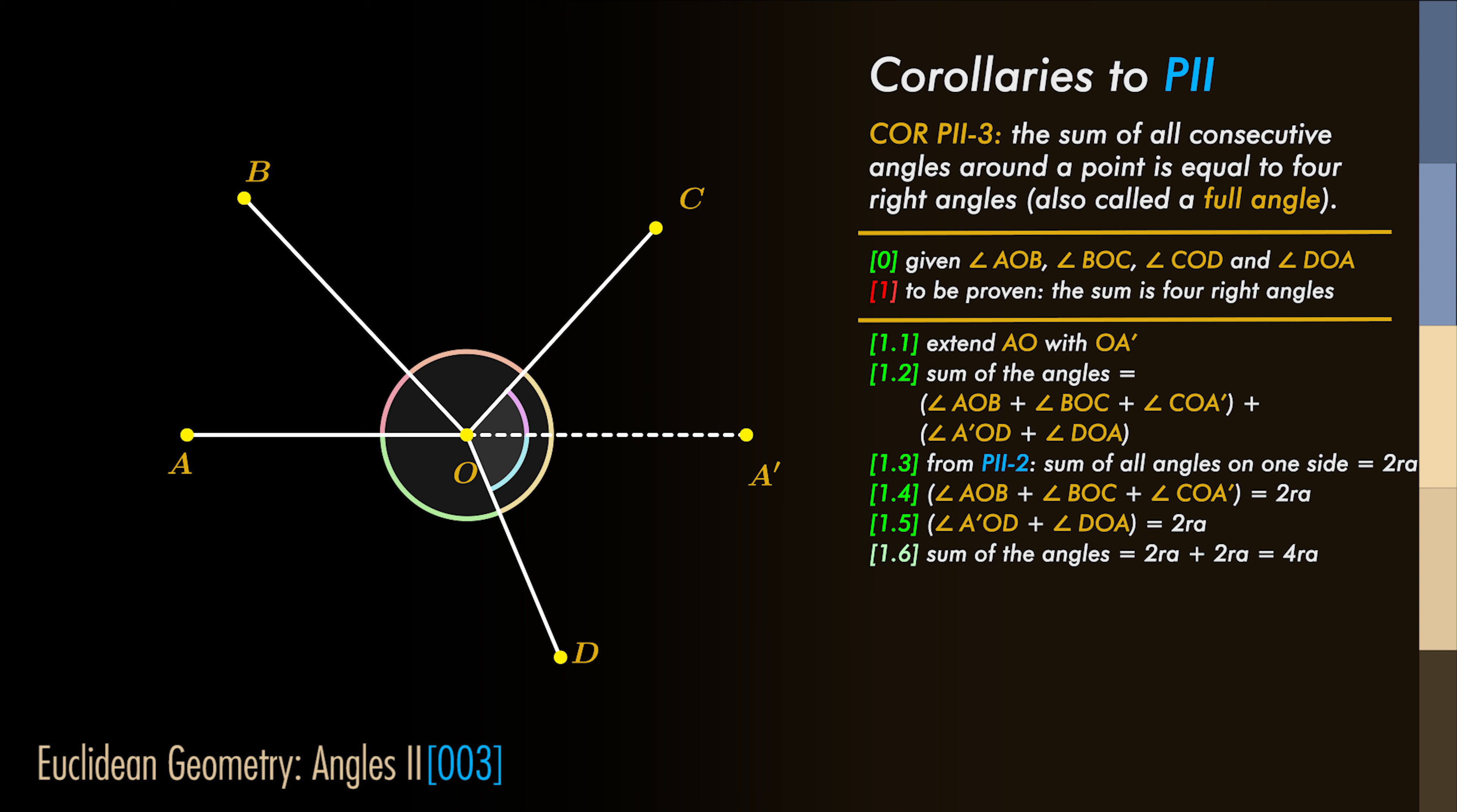And so we can conclude that the sum of all the angles around a vertex is four right angles, or a full angle.